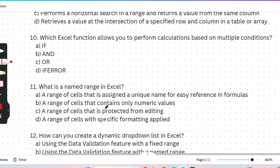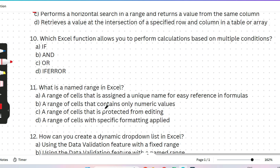The next question: which Excel function allows you to perform a calculation based on multiple conditions — IF, AND, OR, or IFERROR? This is a recent question, so I hope you give importance to it. It seems easy, but it was actually asked. The correct answer is AND — using AND allows you to perform calculations based on multiple conditions.